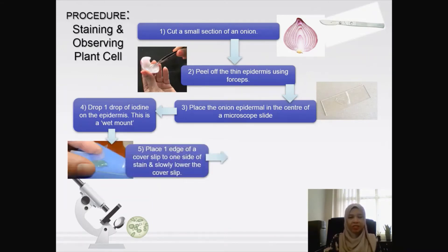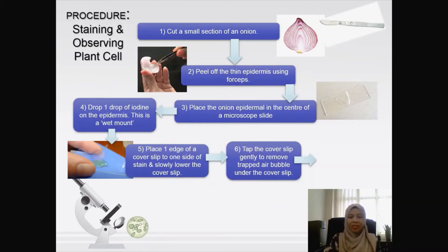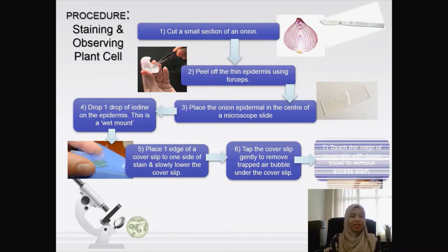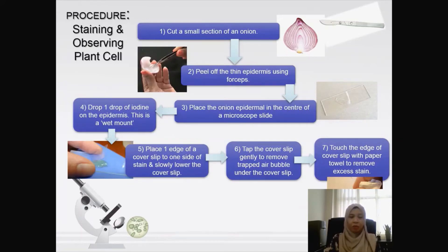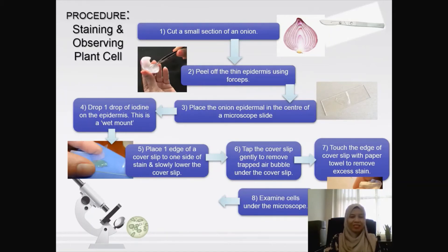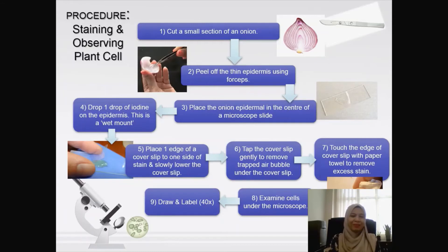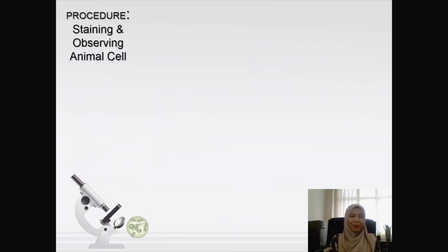Place one edge of a cover slip to one side of the stain and slowly lower the cover slip to cover the slide. Tap the cover slip gently to remove any trapped air bubbles. If there is excess stain, touch the edge of the cover slip with a paper towel to remove it. Then examine the slide under the microscope, observe, and draw and label the image seen.